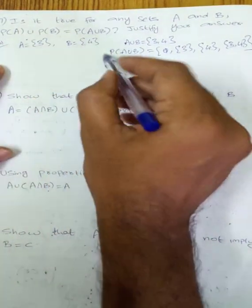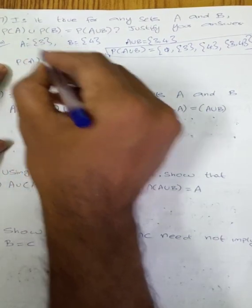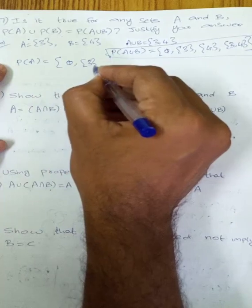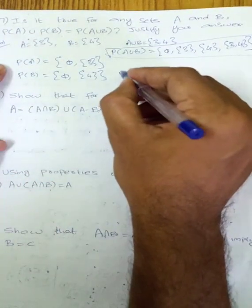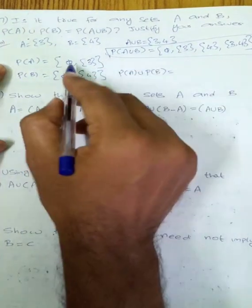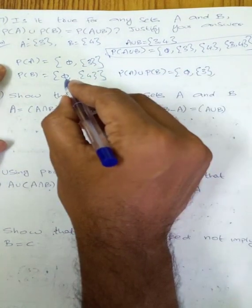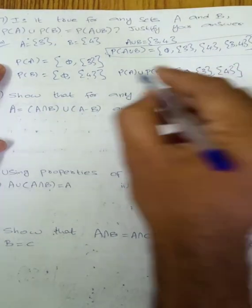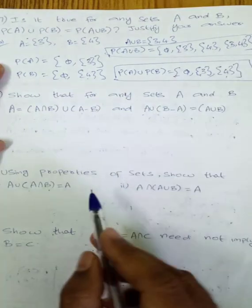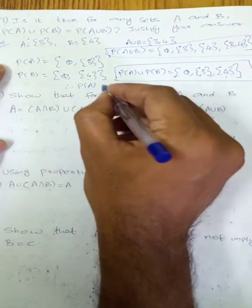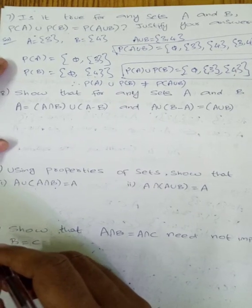Now P of A union P of B — the right hand side and left hand side. P of A and P of A union B are computed and compared to show whether P of A union P of B equals P of A union B.